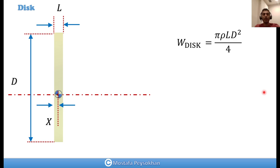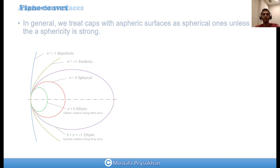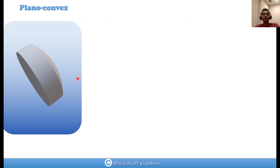Now let's look at different examples. For a spherical surface, we usually approximate all surfaces with a spherical surface, even if it is aspheric, parabolic, or hyperbolic. We can approximate all of those with a spherical surface. The only case where we cannot use this approximation is when the surface is very aspheric, but generally we can use this approximation.